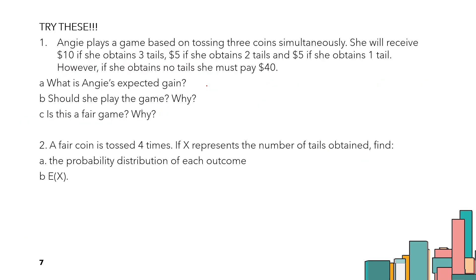Try this one at home: Angie plays a game based on tossing three coins simultaneously. She wins if she gets three tails, wins if she gets two tails, wins if she gets one tail, but if she obtains zero tails, she must pay $40. What is the expected gain? Should you play? Is it a fair game? Take note and try this one at home. Thank you for listening.